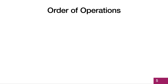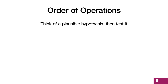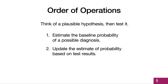There is an order of operations that works best for diagnostic testing. We should think of a plausible hypothesis, then test that hypothesis. That's better than getting the test result first and then making up an explanation for the test result. First, we should take a minute to estimate the baseline probability of a possible diagnosis. And second, we should proceed with testing and update our estimate of probability of that diagnosis based on test results.